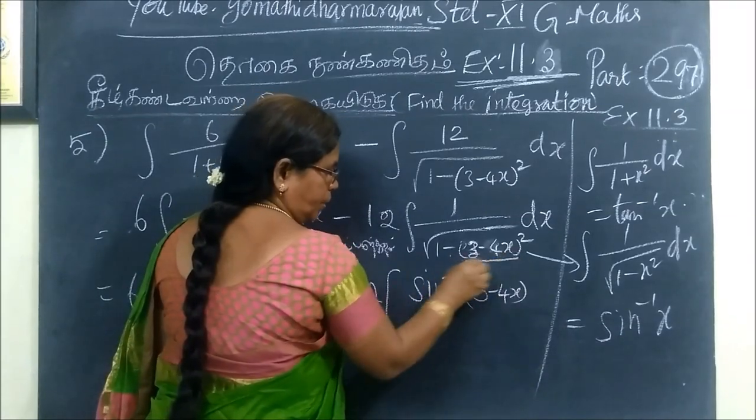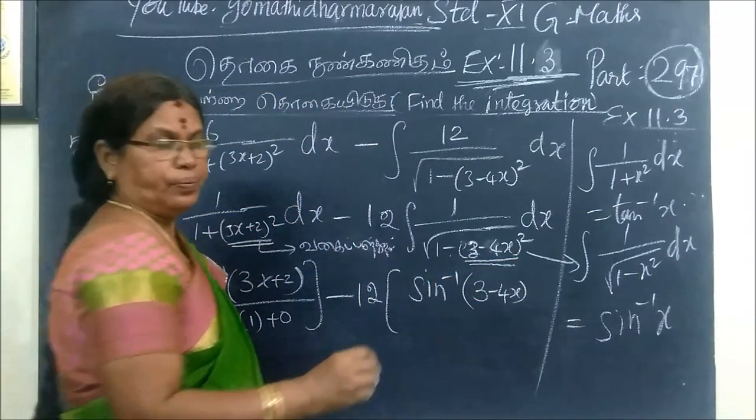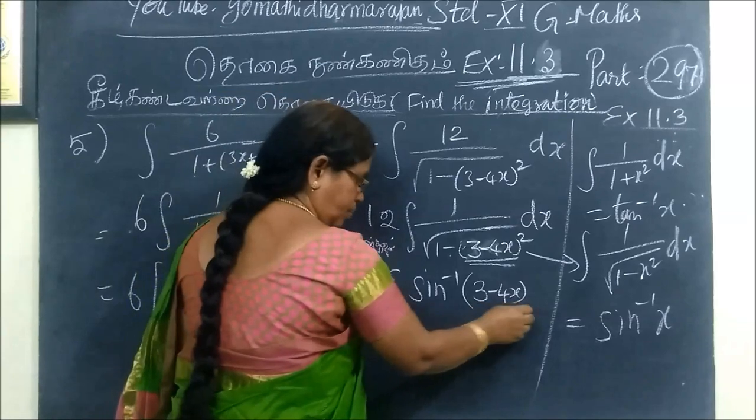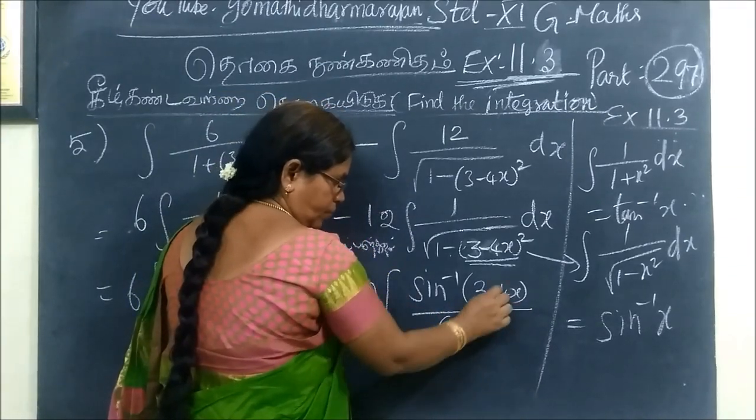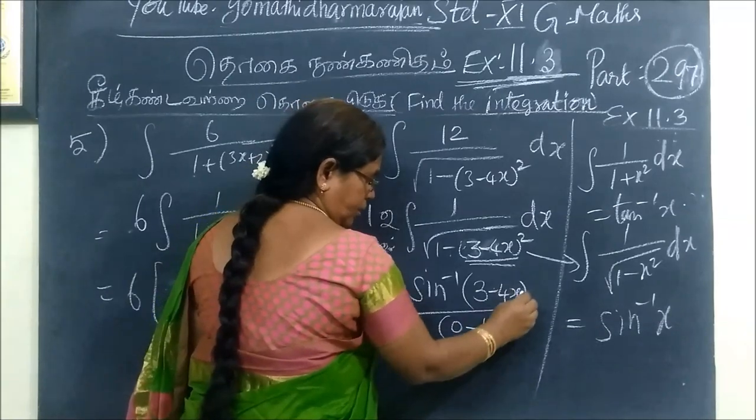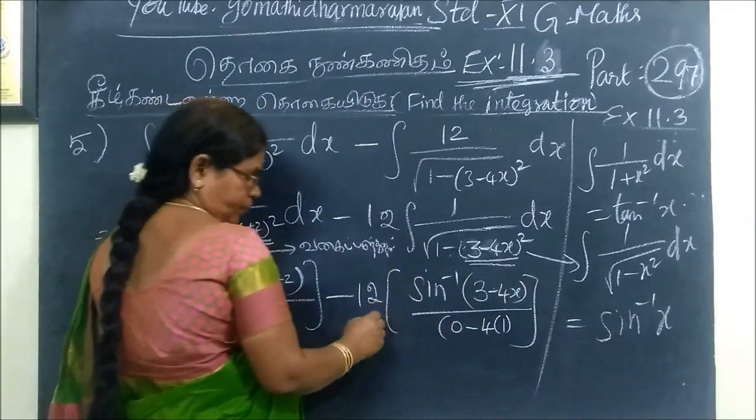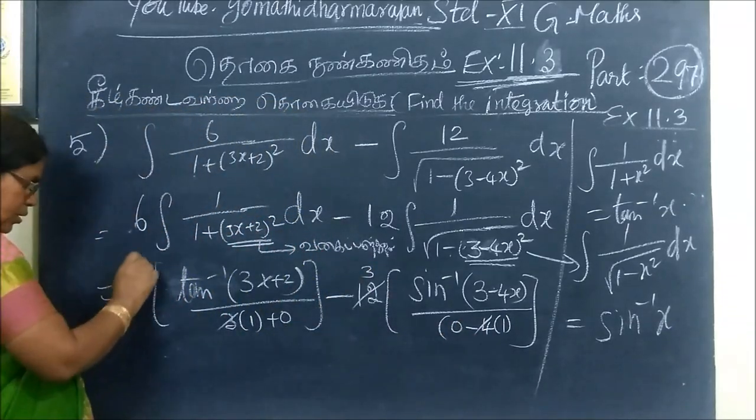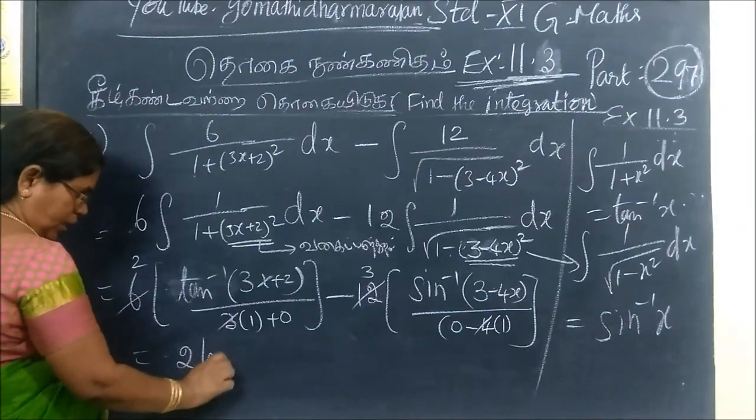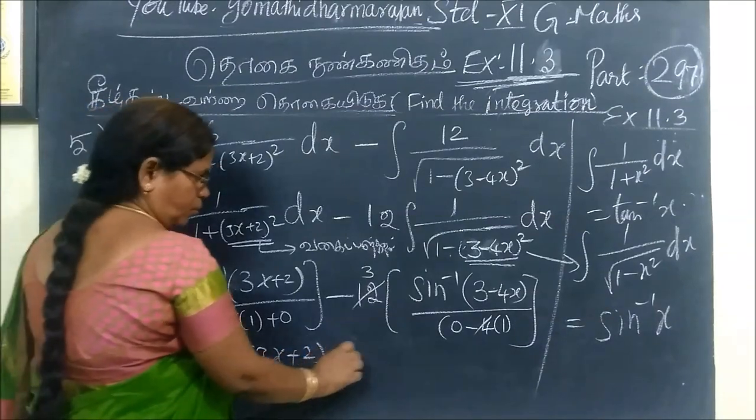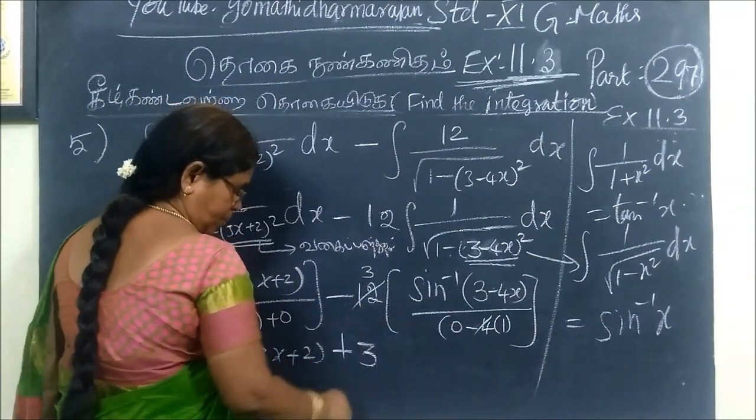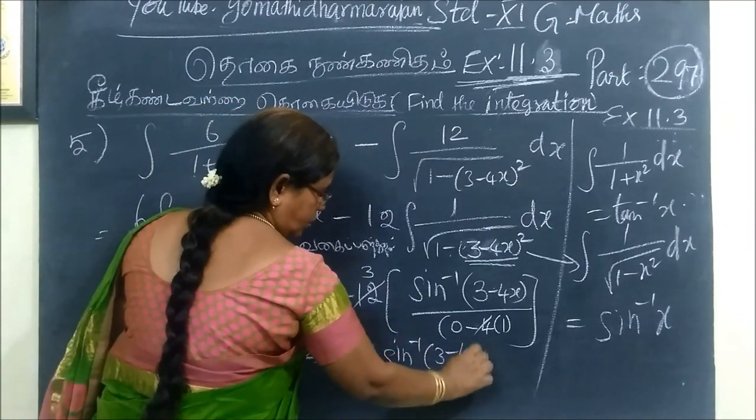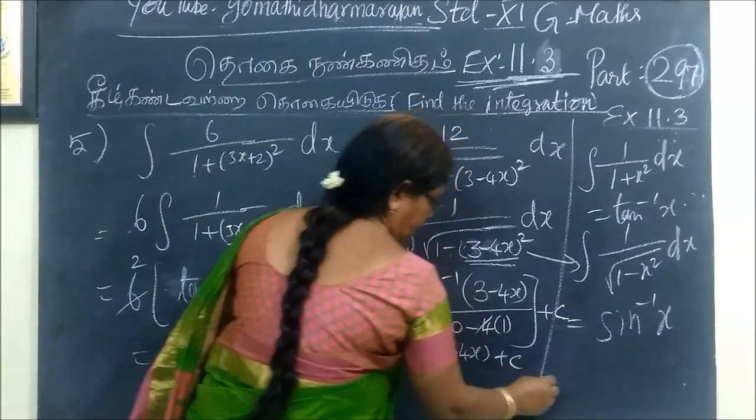Sin inverse x of the angle is equal to 3 minus 4x. This is root of 1 minus x square. But instead of x, you are getting 3 minus 4x. Other things will differentiate. 3 is 0, minus 4. This will cancel out. So 2 tan inverse 3x plus 2 minus 3 sin inverse 3 minus 4x then plus c.